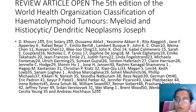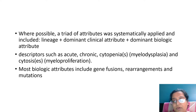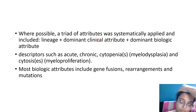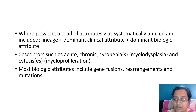These words have been there — it's just that they were not in the WHO classification. Now WHO has adopted them. So what are the key features of this latest WHO 2022 for myeloid and histiocytic neoplasms? A triad of attributes was systematically applied: lineage (which they always included), the dominant clinical attribute (which for MPN they had done last time also), and the dominant biological attribute — that is the mutational profile. Descriptors such as acute, chronic, cytopenia, myelodysplasia, cytosis, or myeloproliferation have been kept, maybe renamed slightly. Biological attributes include gene fusions, rearrangements, and mutations — so basically three things: molecular, clinical, and lineage-specific.